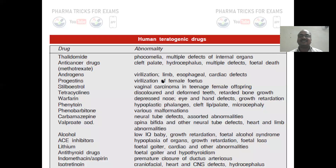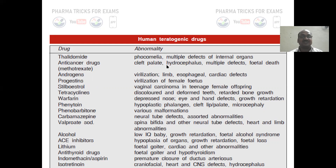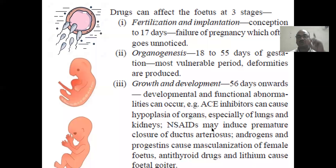All these examples you have to write in the examination. Human teratogenic drugs include thalidomide, which causes phocomelia — absence of the limbs. Thalidomide also causes multiple defects of internal organs. Anti-cancer drugs and all these drugs cause teratogenicity in humans — you should not give them during pregnancy, as they cause disease.